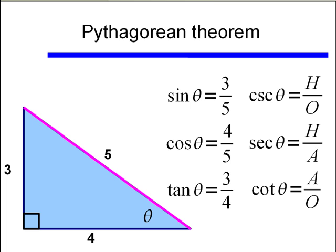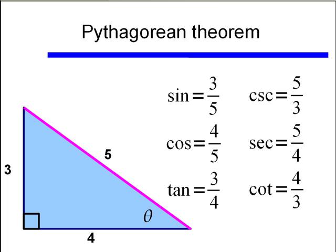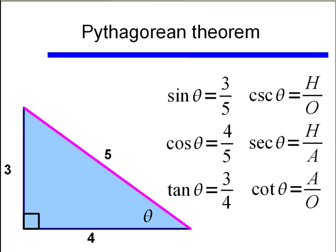Now here's a warning about something I am very particular about. If you write your sine, cosine, and tangent functions without the angle — without that theta — you're going to lose points on a test. Remember, sine, cosine, tangent, cosecant, secant, and cotangent are functions. All functions need an input. You can't simply say 'sine equals 3 fifths.' It's the sine of this particular angle theta that equals 3 over 5. So please do not leave out that angle input.